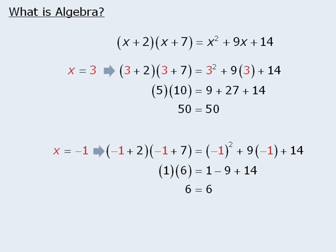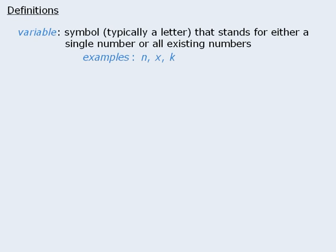Now that we've taken care of what algebra is, let's examine some key definitions. The first word is variable. A variable is any symbol, typically a letter, that stands for either a single number or all existing numbers.